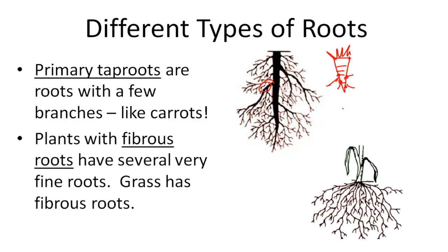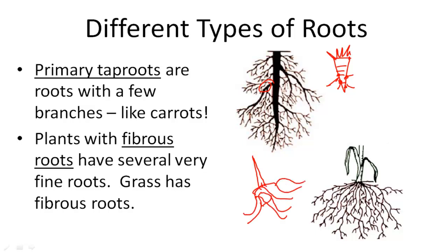Plants with fibrous roots have several very fine roots. Grass has roots like this. So one little stem of grass at your park actually has all of these things growing out underneath it.